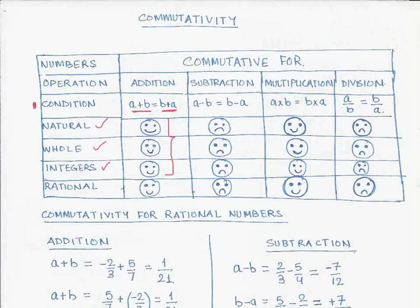For rational numbers, we will prove in the next video that rational numbers are also commutative under addition. The smiley face shown here means that they follow this property. Now let's look at commutativity under the operation of subtraction.